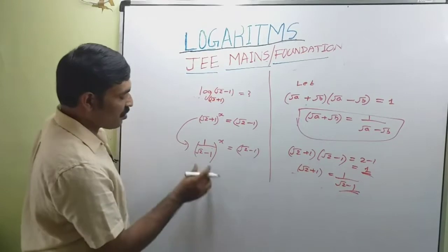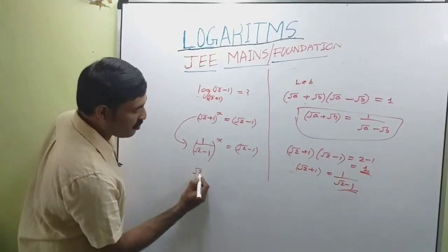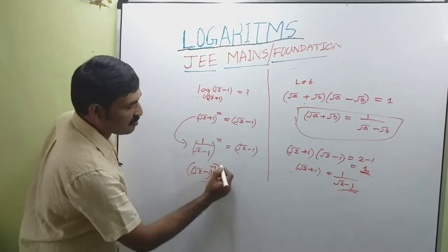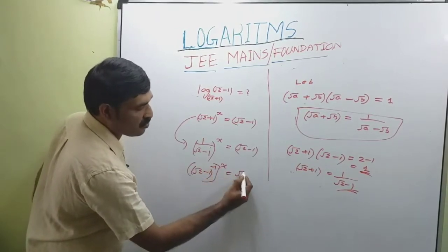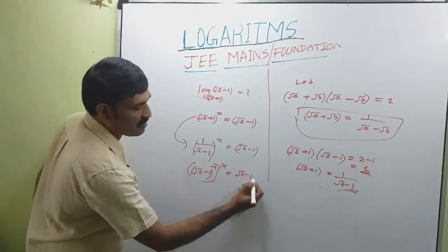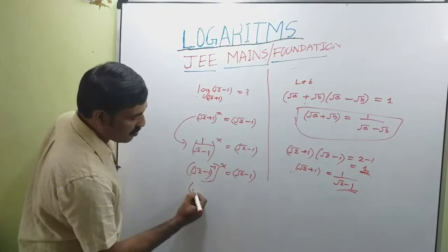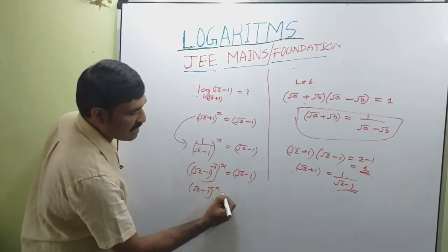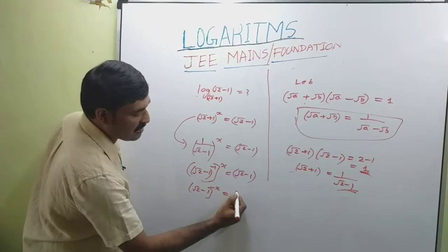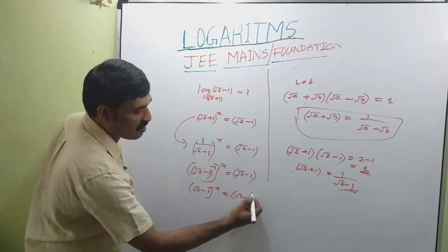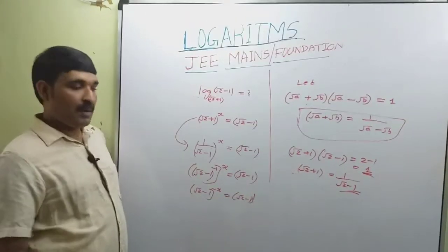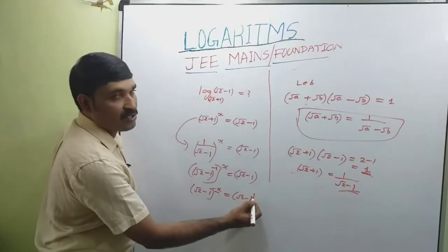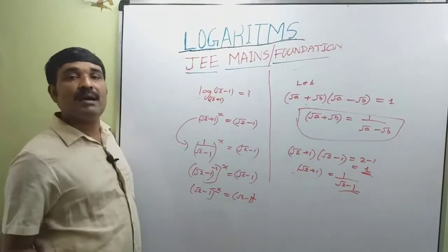Or we can write (√2 - 1)^(-x) = (√2 - 1)^1. Comparing the powers, -x = 1, or x = -1.